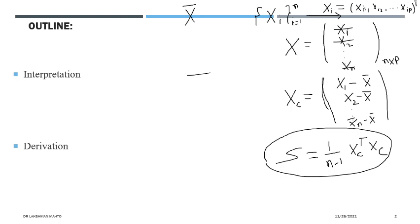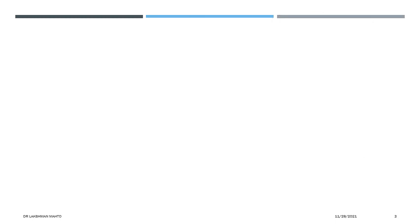We denote the sample covariance matrix by S or simply capital S. The notation sigma is reserved for the covariance matrix of the population. Population here doesn't mean a country's population — it means all the data from the distribution from which the data is originated. That is the sense of population.